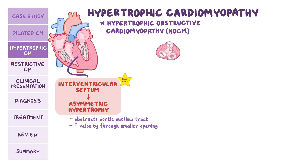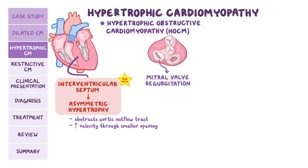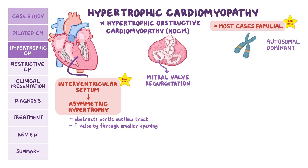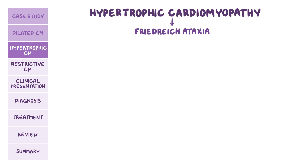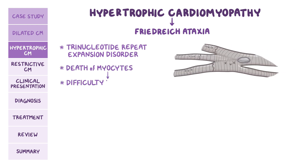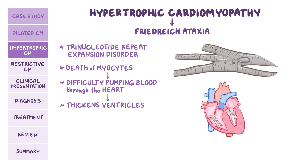At the same time, the mitral valve doesn't shut all the way, allowing blood to leak back into the left atrium — called mitral valve regurgitation. Most cases of hypertrophic cardiomyopathy are familial and inherited in an autosomal dominant fashion, so family history is an important clue. Mutations commonly affect genes coding for cardiac muscle components such as beta-myosin heavy chain and myosin-binding protein C. A commonly tested cause is Friedreich's ataxia, a trinucleotide repeat expansion disorder where myocyte death leads to thickening of the ventricles, resulting in hypertrophic cardiomyopathy.